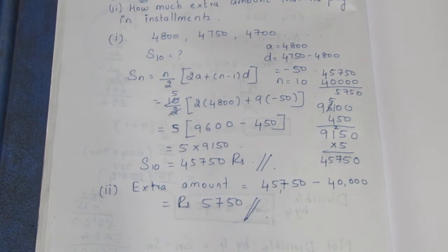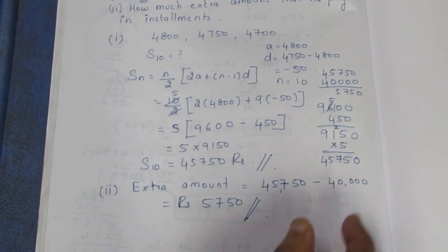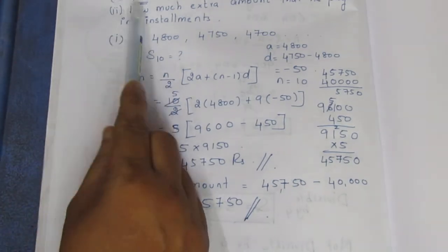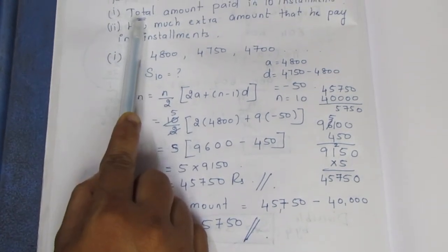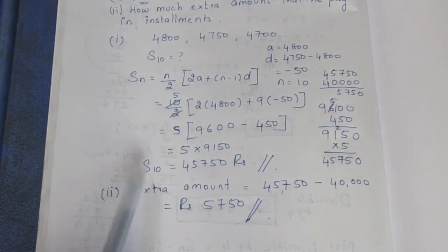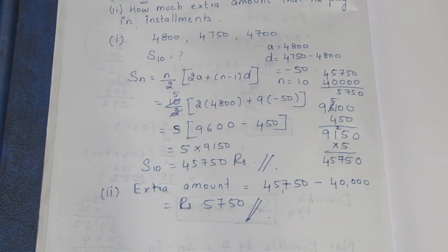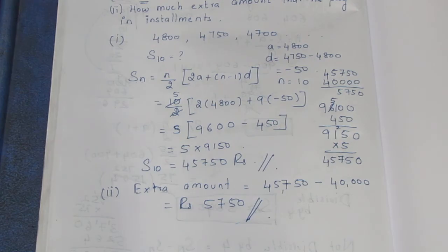So if you pay in installments you pay 5,750 extra compared to the cash price of 40,000. To find the total amount, use the Sn formula. If you need the 10th month installment, use the Tn formula. That is the complete solution. Thank you.